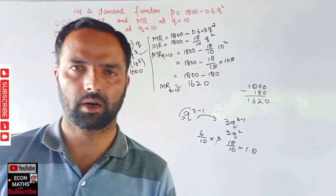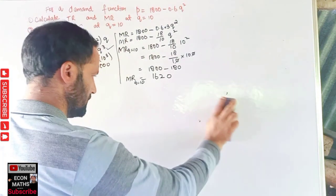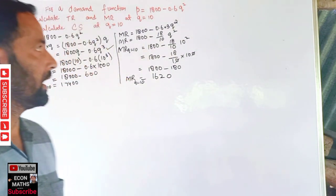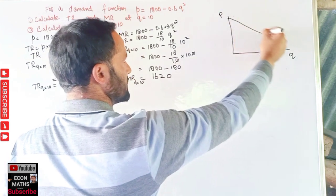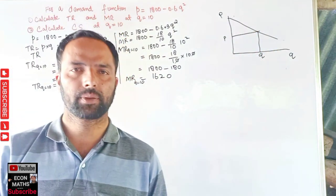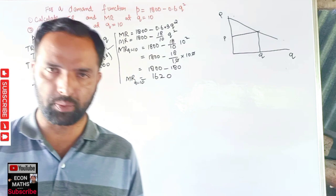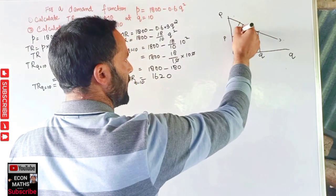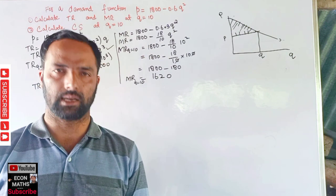Now coming to the second part: calculating the consumer surplus. Consumer surplus is the difference between the price consumers are willing to pay and the price they actually pay. Graphically, if we have quantity on the x-axis and price on the y-axis with a demand curve, consumer surplus is the area below the demand curve and above the equilibrium price — that right-angled triangle region.